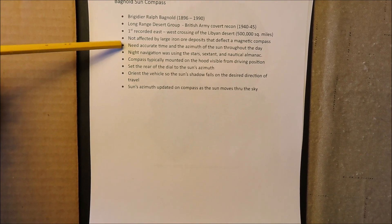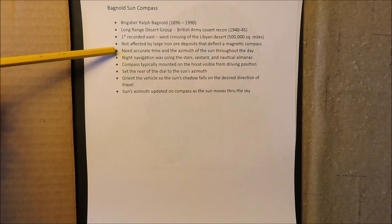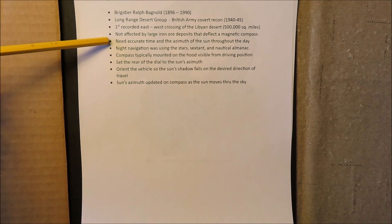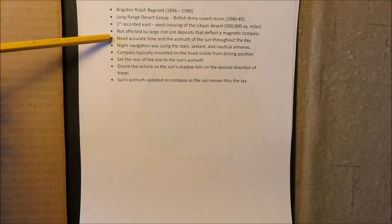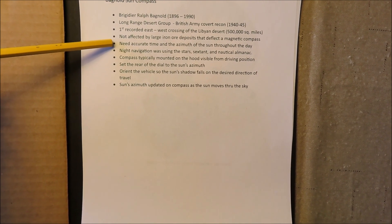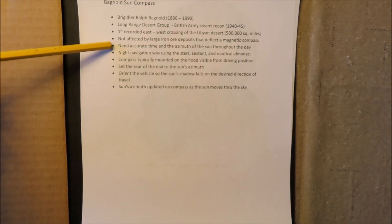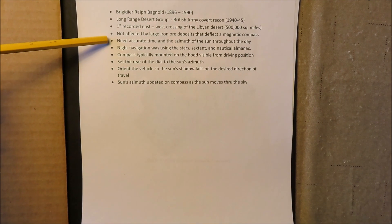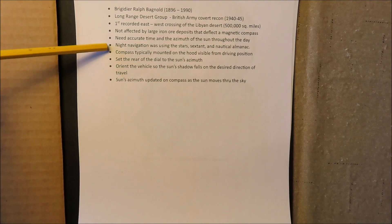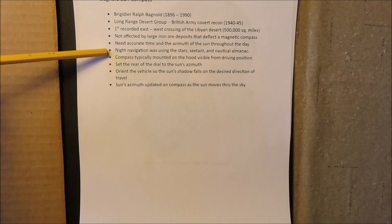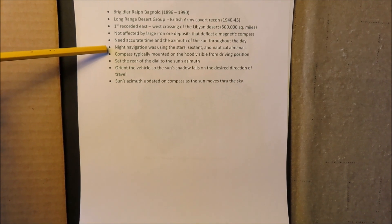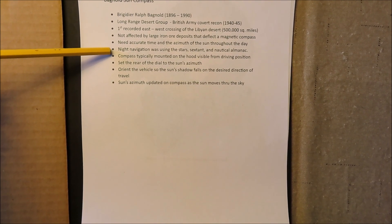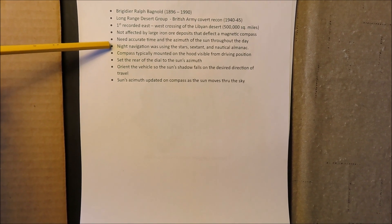And what you need for it to work is you need accurate time, and you need to know the azimuth of the sun throughout the day, which can be calculated using mathematics and the nautical almanac. So during the day they navigated using the sun compass. At night, they used the stars and marine sextant and the nautical almanac. So that's standard celestial navigation at night.